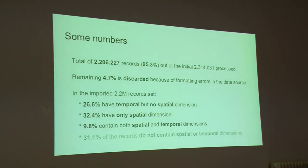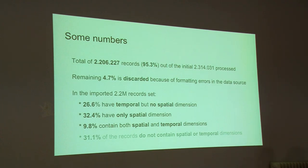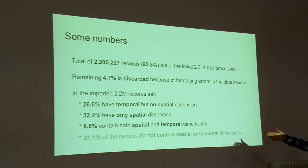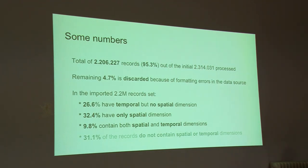Right now we are working with around 2.2 million records, which is almost 1% of the original corpus. Some of the records do not contain spatial or temporal dimensions, while others have only one or two dimensions, or even both of them.